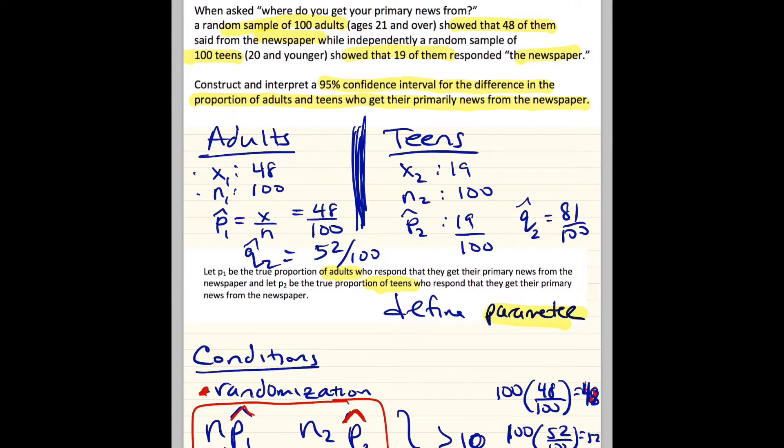So we need to say that confidence intervals are conditions, formulas, interpretation. I know we know how to write randomization, and I'm not going to write it, but basically the stem of the problem states that the sample of adults were chosen at random, and then independently, the random sample of 100 teens were chosen. And it's important to be independent because let's just pretend it's a mother-daughter. If the mother reads the newspaper, it's probably more likely that the daughter will read the newspaper or get her news from the newspaper. So they got to be independent. That's your first thing, your randomization.